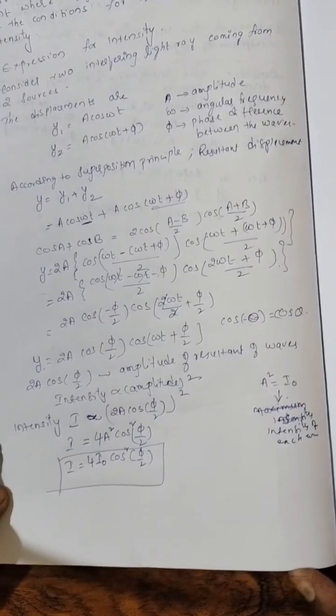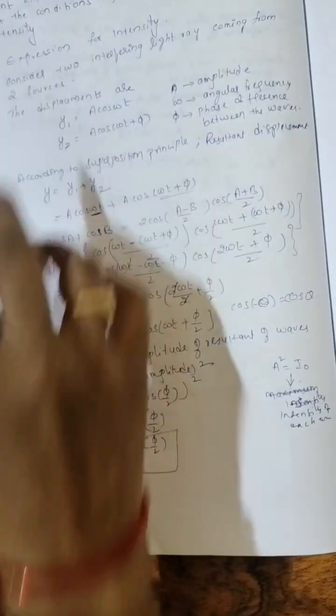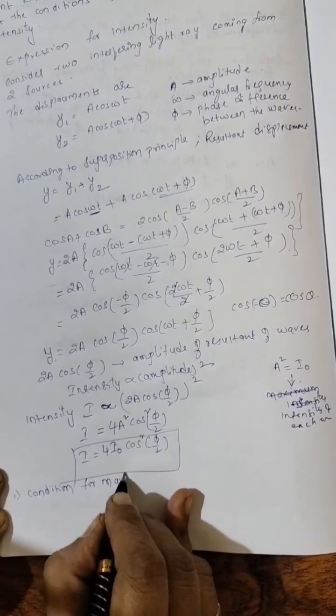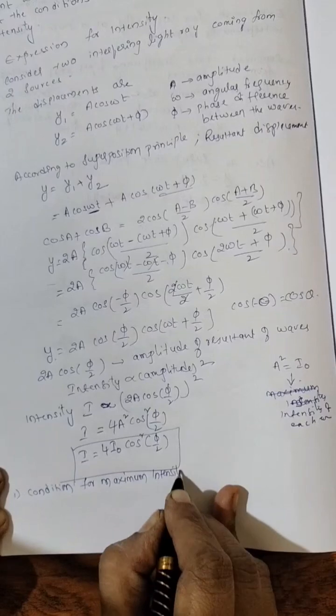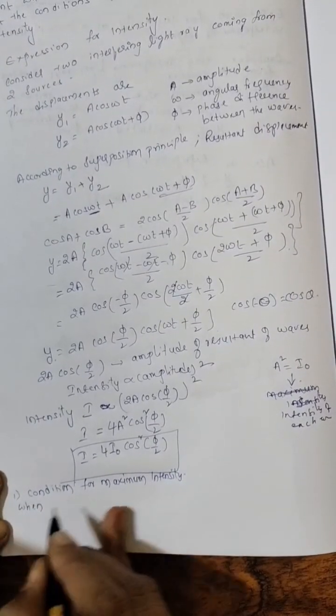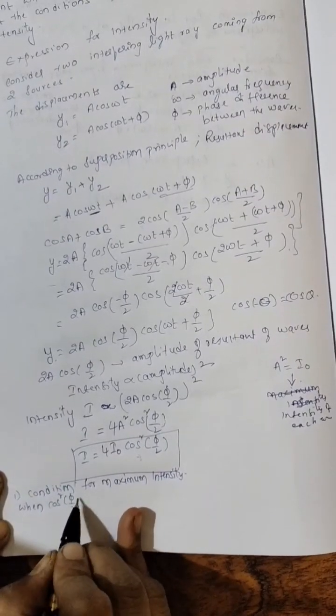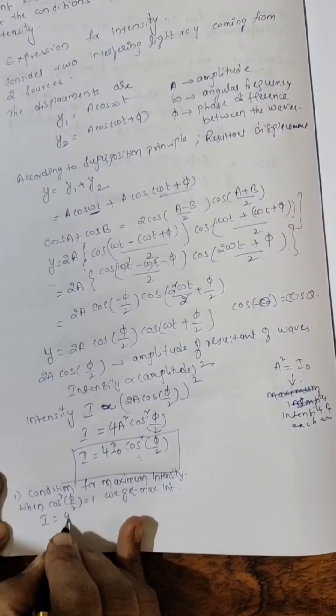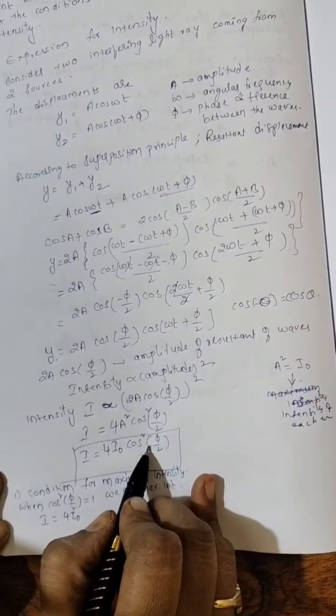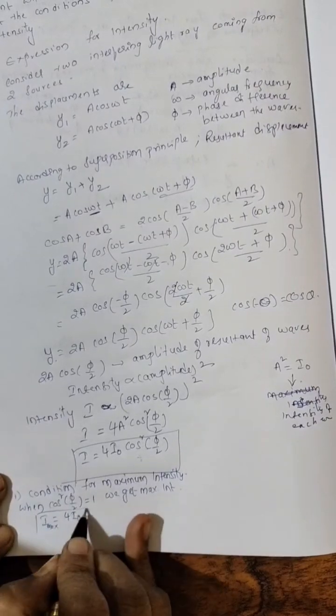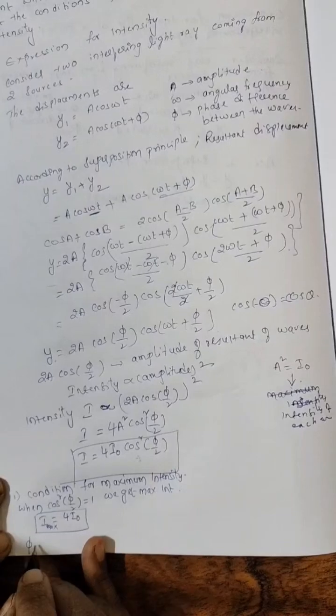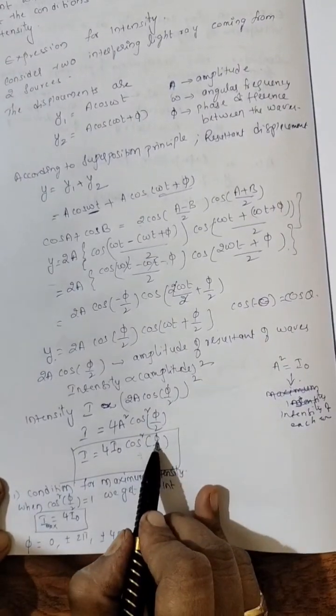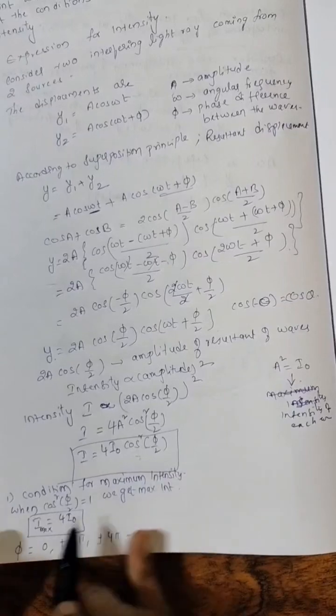Now next, what he asked? Next part, the conditions for maximum and zero intensity. The first one: condition for maximum intensity. So when in this equation cos square phi by 2 if phi by 2 is equal to 1, we get maximum intensity. So I becomes 4 I naught, substituting 1 in place of cos square phi by 2. So this we got maximum intensity 4 I naught, and we get this when phi is equal to 0, plus or minus 2 pi, plus or minus 4 pi, so on. When you substitute pi values in this cos square phi by 2, we get maximum intensity.